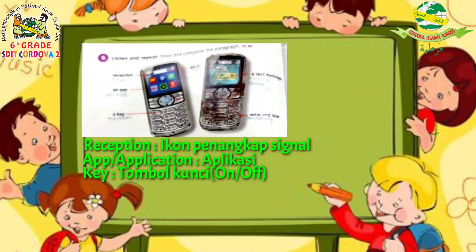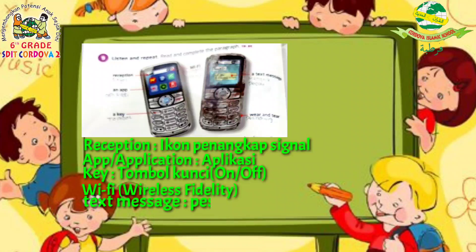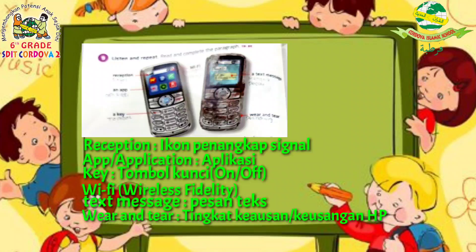And then, WiFi — WiFi is a wireless network, so it is an internet network so that we can access the internet on our phone, for example sending email, WhatsApp, YouTube, and other social media. Next, text message — in the old days there was no WhatsApp, so if we want to send our message to another person we have to text the message first. And the last is warranty — warranty shows the level of wear or damage on the phone due to long-term use. Please write and understand these.